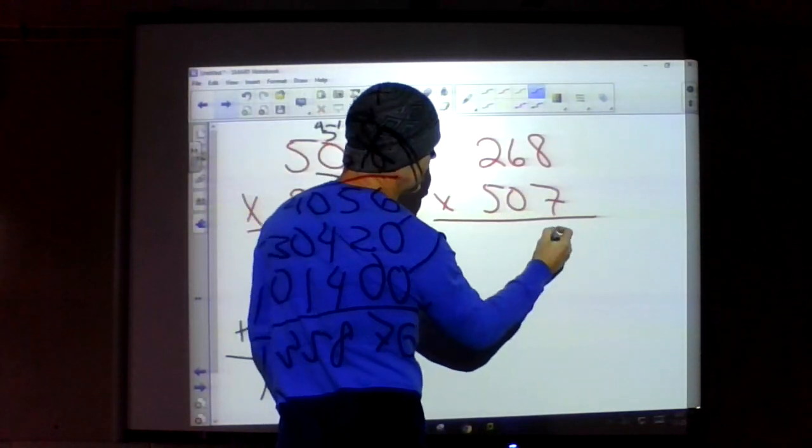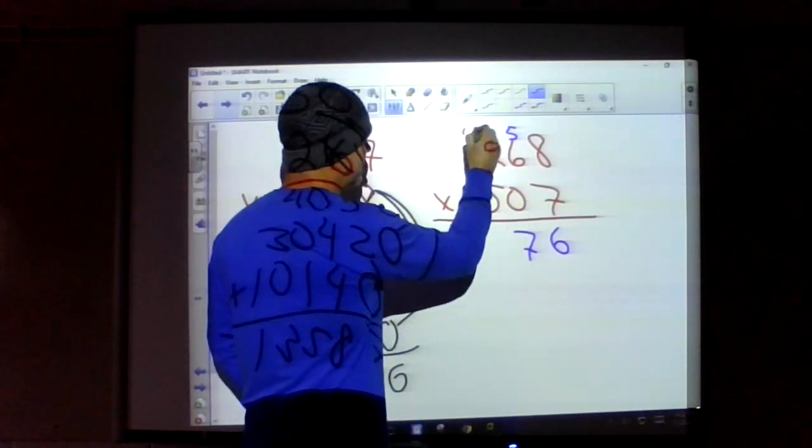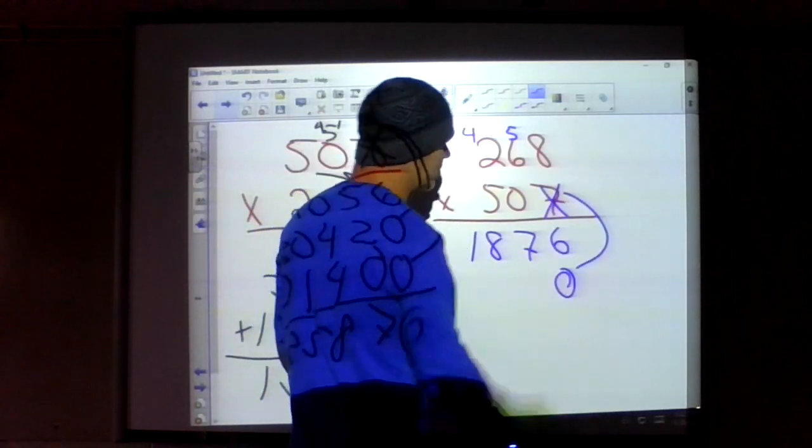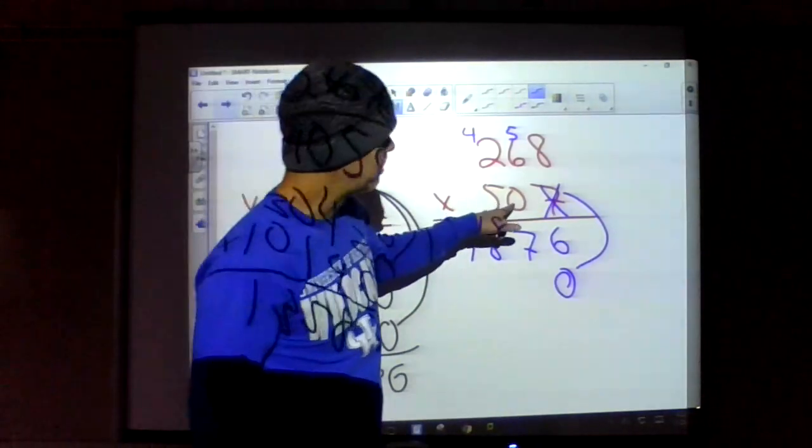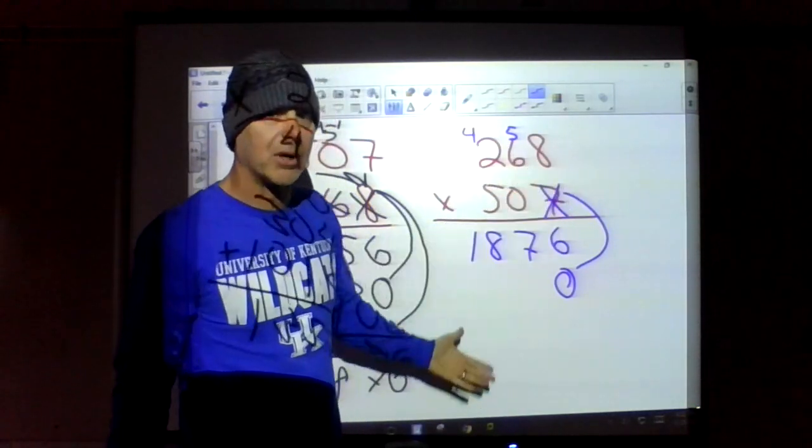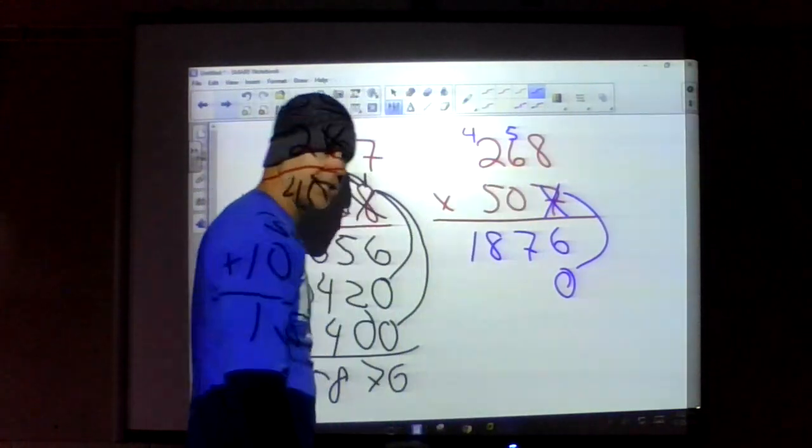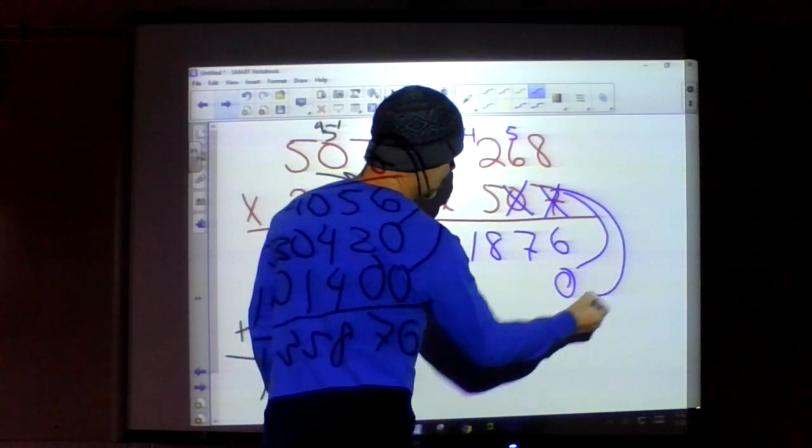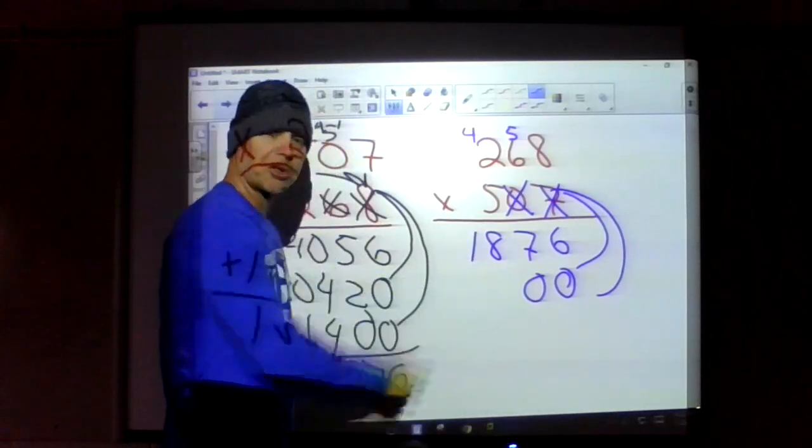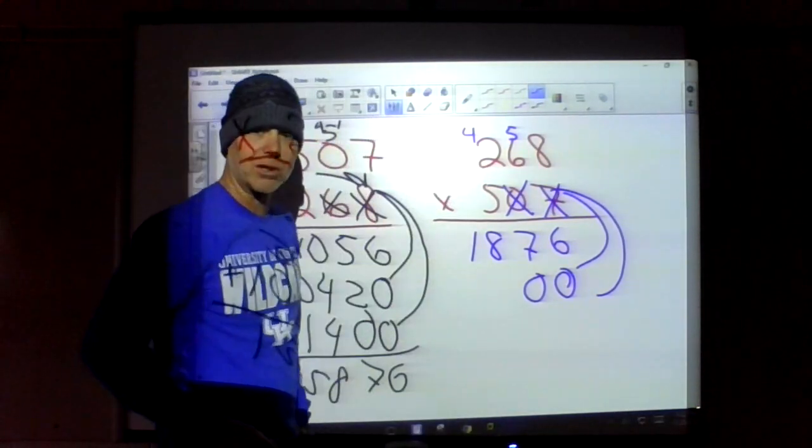Now let's do it. This was a zero in the top factor. Now let's do it with a zero in the second factor. Let's see how this changes things. Again, seven times eight is 56 carrying my five. Seven times six is 42 plus the five would be 47. Seven times two is 14 plus the four is 18. X's and O's. But looky here, I'm going to multiply that zero through times everything. What's anything times zero? Zero groups of anything is going to be zero.